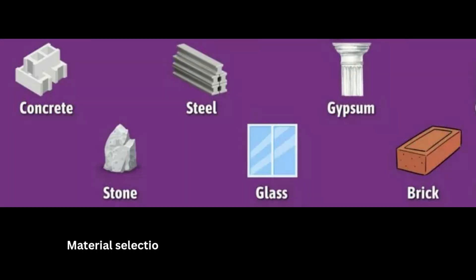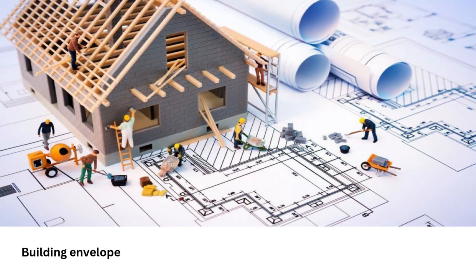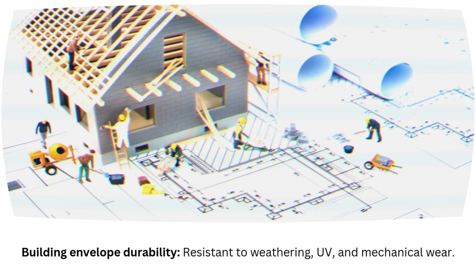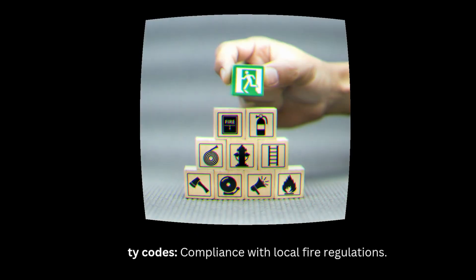Material selection: non-combustible or fire resistant materials. Building envelope durability: resistant to weathering, UV, and mechanical wear. Safety codes: compliance with local fire regulations.